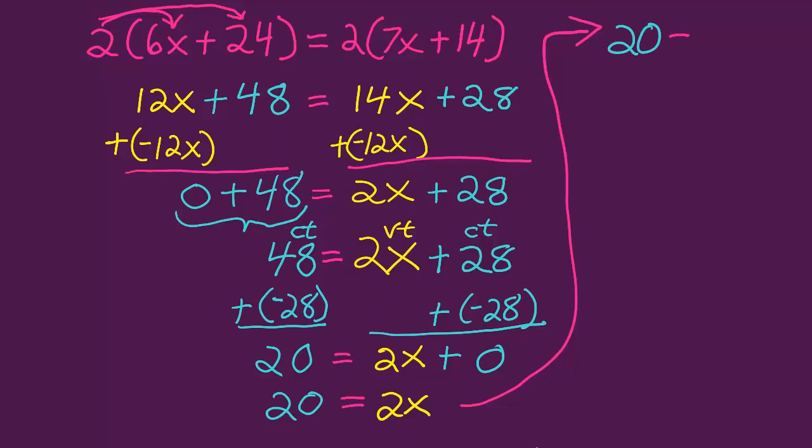When I have that, that means it's time to divide by the coefficient of the variable, which is 2. In this case, I'll divide both sides of the equation by 2. 20 divided by 2 is 10. 2 divided by 2 is 1. So 10 equals 1x. 1 times x is x. So 10 equals x, x equals 10.